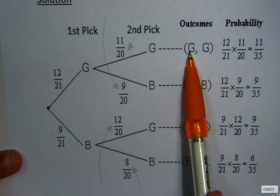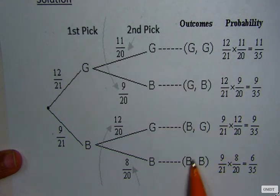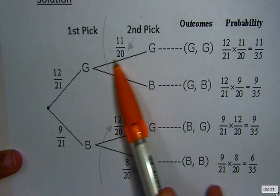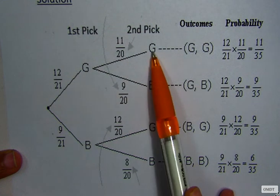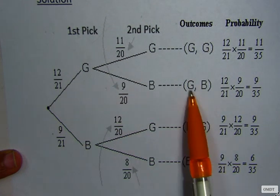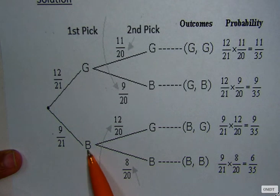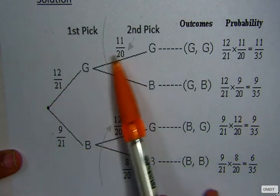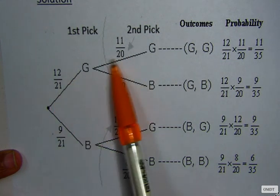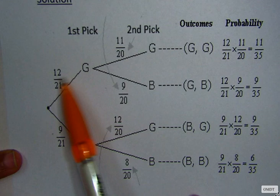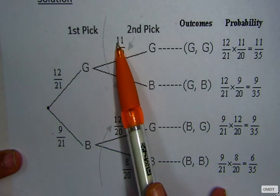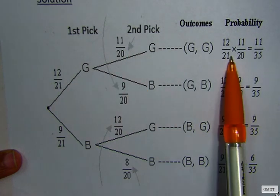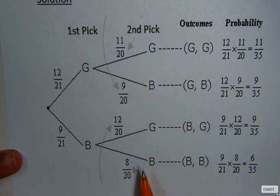Then you have the possible outcomes. How do you get your possible outcomes? You just follow the branches. So you have GG (green green), green blue, blue green, and blue blue. And the probabilities for the possible outcomes, you also follow the branches. So for the first one, green green, you have 12 over 21 multiplied by 11 over 20. And you have to do this for all the branches.